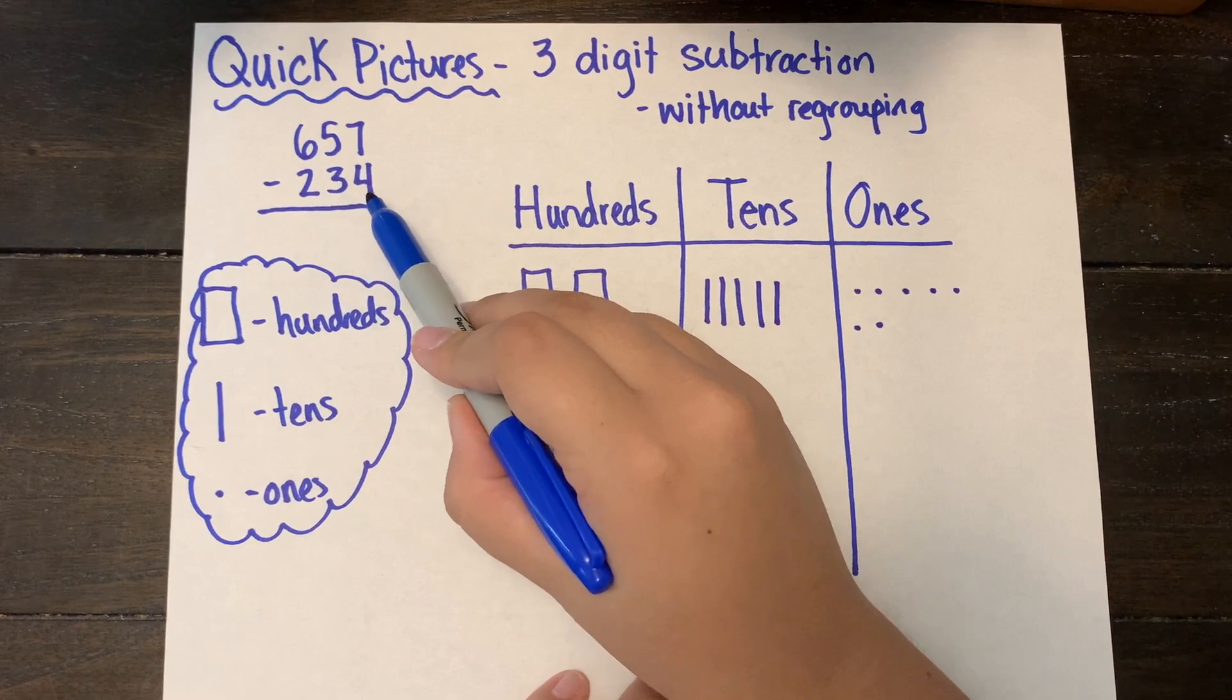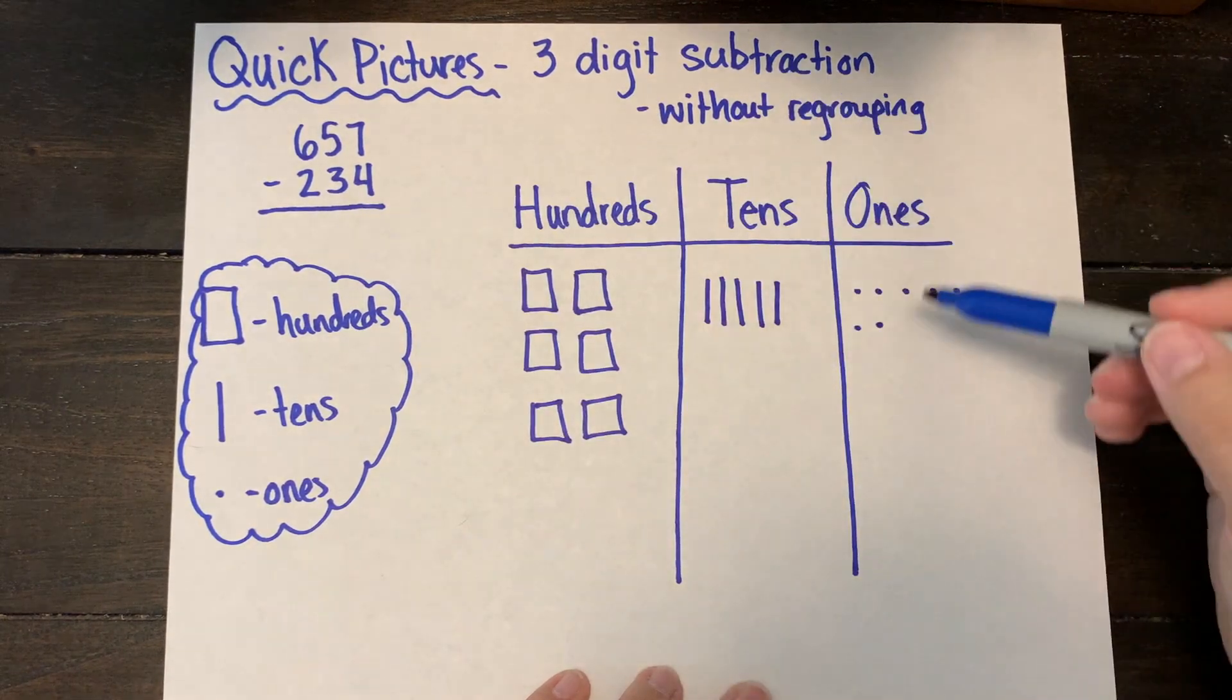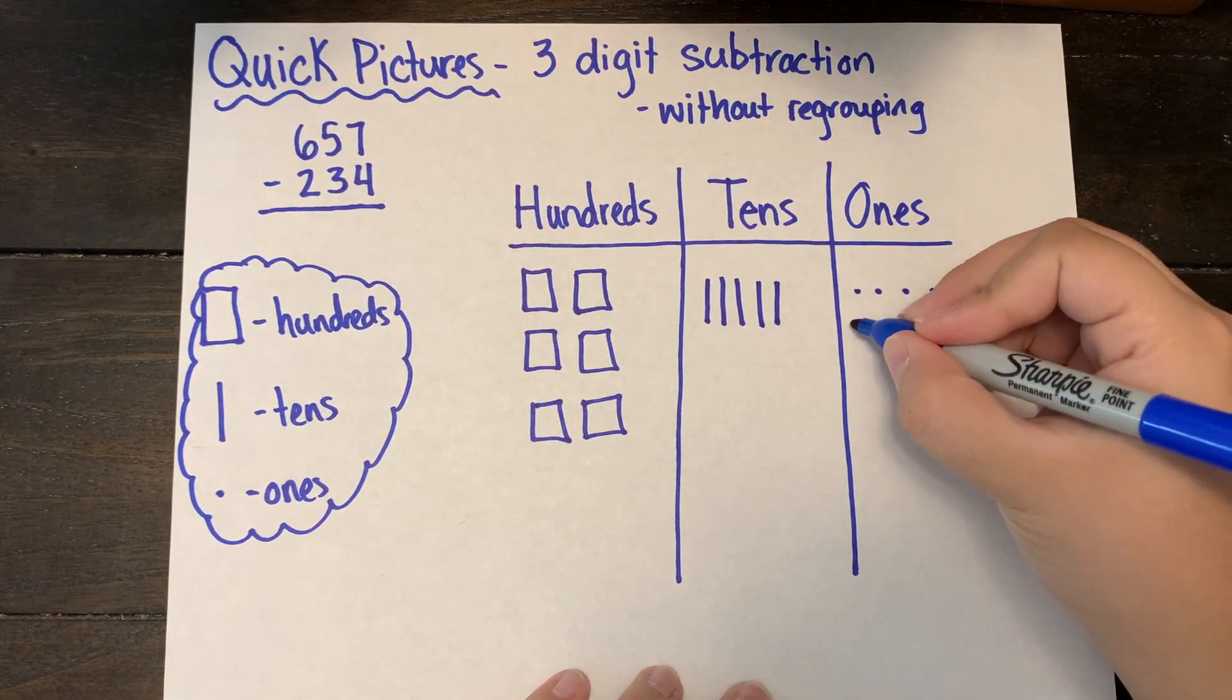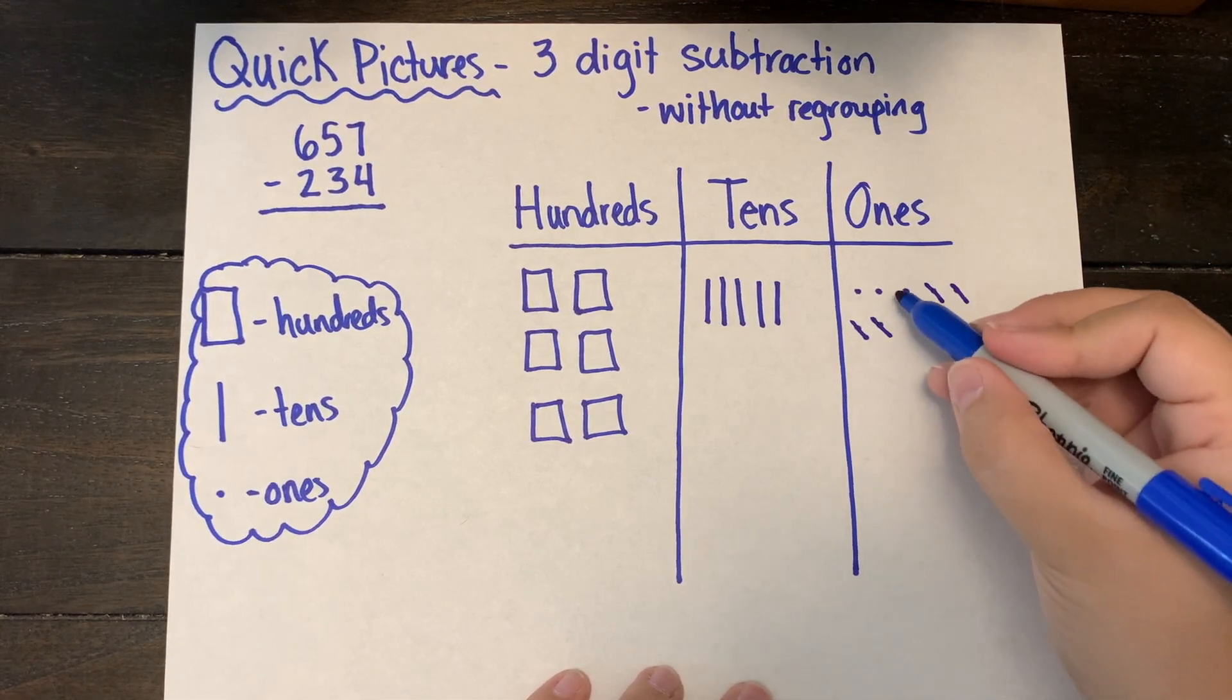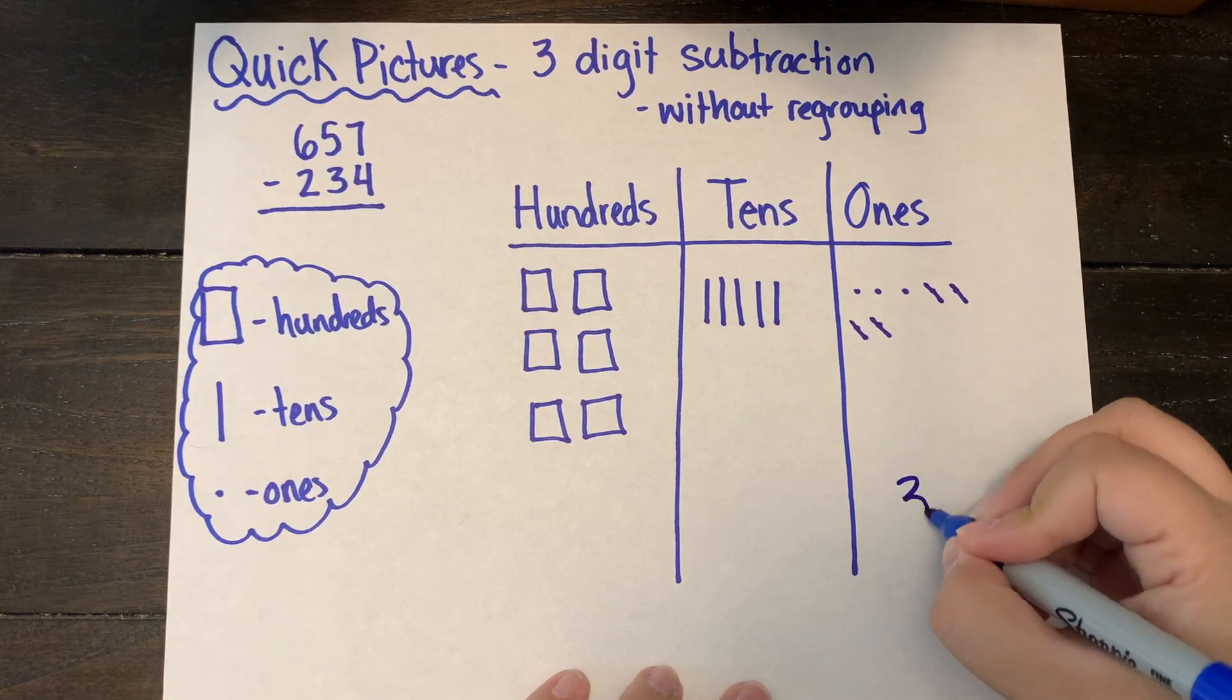Now I'm going to take my subtrahend and I'm going to start with my ones column. I see I have enough ones in my ones column to take four ones away. So I'm going to go ahead and start subtracting, leaving me with three ones in my ones column.